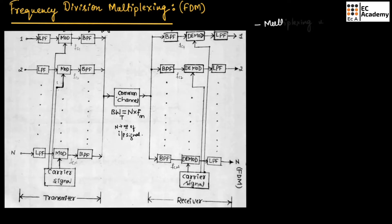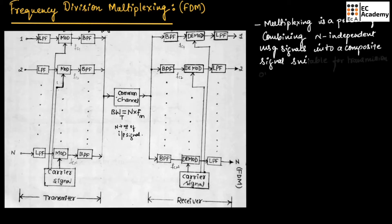Multiplexing is a process of combining N independent message signals into a composite signal suitable for transmission over a common channel or a single channel.